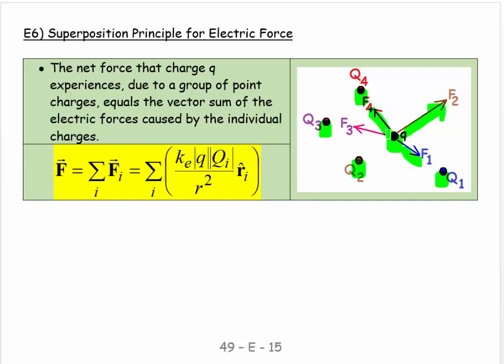We have to add them up vectorially. We say the net, the overall, the vector sum force that charge little q experiences due to the group of point charges equals the vector sum of the electric forces caused by the individual charges.